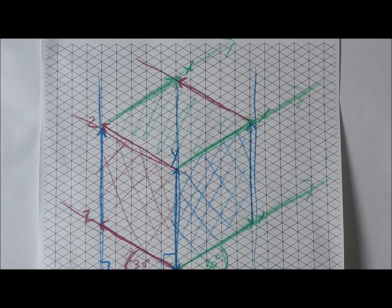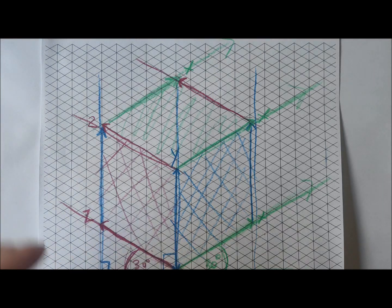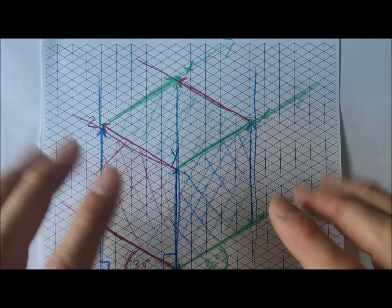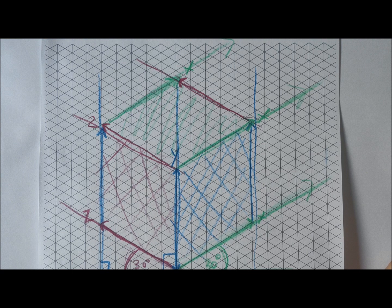Now isometric drawing is a 3D drawing technique, and it's used by engineers and designers and technical illustrators. And the advantage of this is it shows the idea of depth, so we can see sort of 3 dimensions on the drawing and on the product.